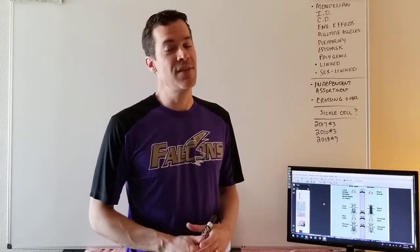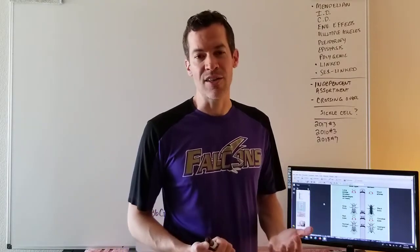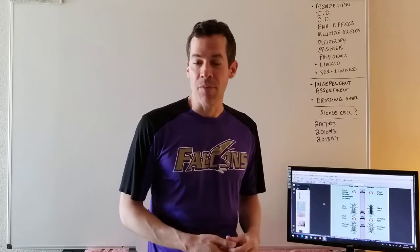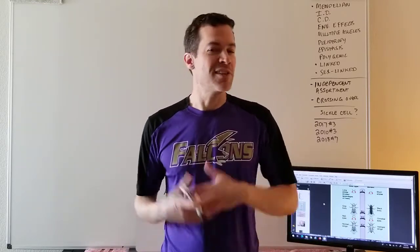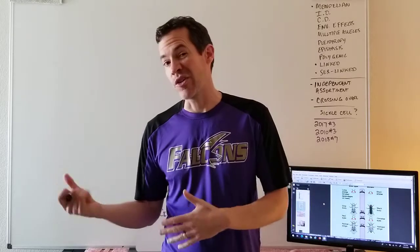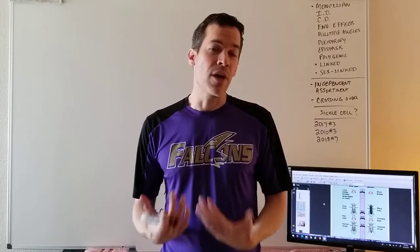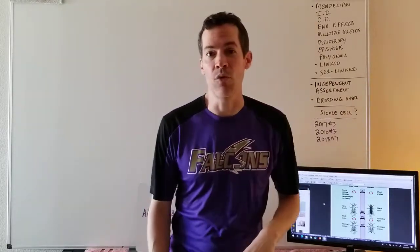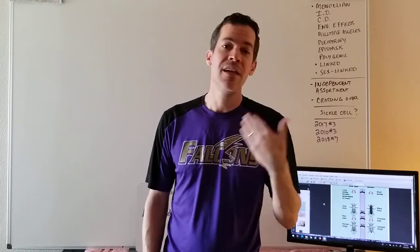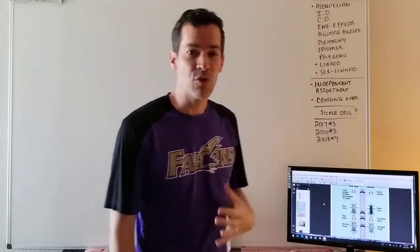Welcome to video 17 on Mendelian genetics and non-Mendelian genetics with a little bit of math. The non-Mendelian genetics is what I call 'breaking Mendel's rules.' You might have learned that big R is dominant red in flower petal colors: big R big R is red, big R little r is red, and little r little r is white. But that isn't always how it goes. Sometimes we have incomplete dominance where big R little r gives pink instead.